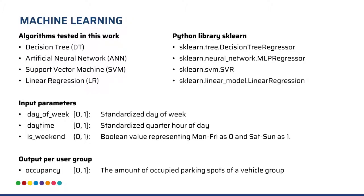Without reciting all related work, we identified four different models from machine learning which we want to train and evaluate on parking space occupancy data. These include, for example, decision trees and neural networks. These models will be fed with three input parameters: day of week, daytime, and is-weekend. All three are standardized floating point values between zero and one. The output is the occupancy per user group, also a floating point value representing a percentage of occupancy.